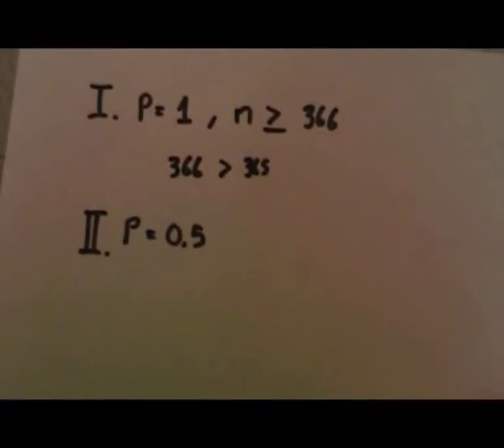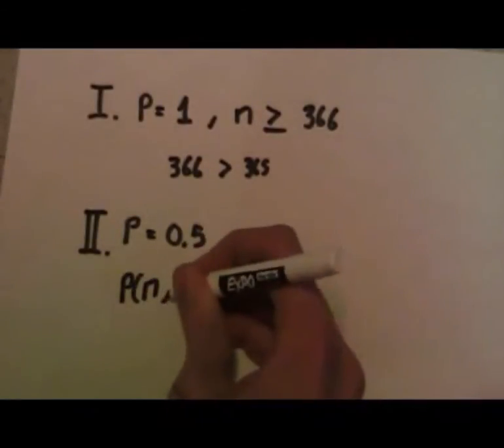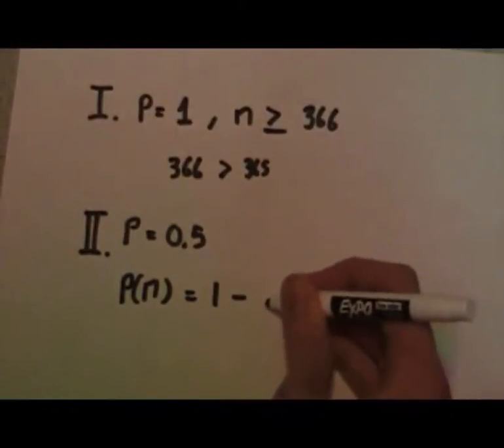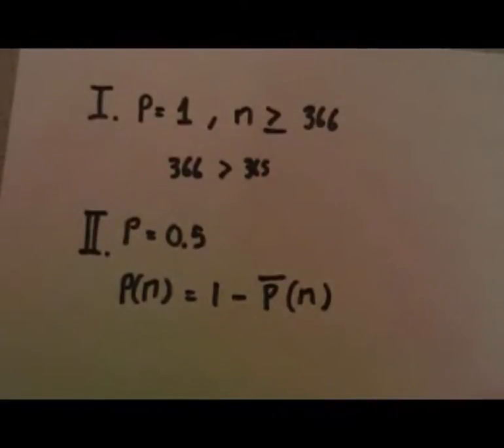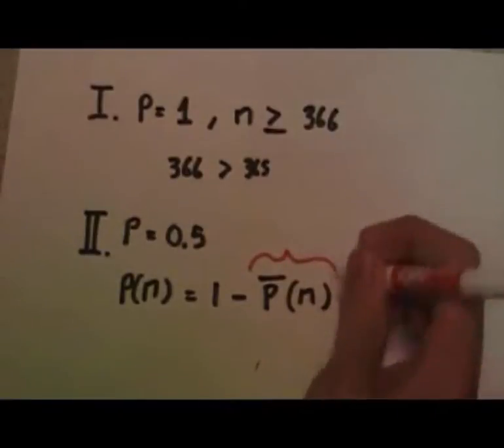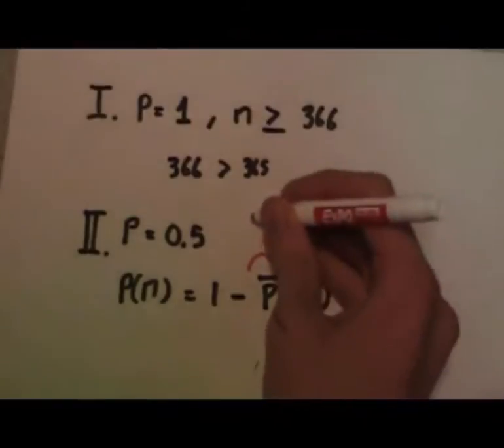Now, for a lower probability of matching, 50% like the problem posed, we need to think about this calculation in terms of the complementary event. We can express P(n) as 1 minus the probability of no birthdays matching. For P bar of n, the complementary event represents the probability that all n of our birthdays are distinct, that they are all different.